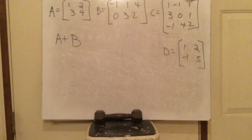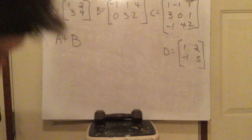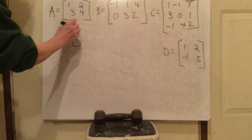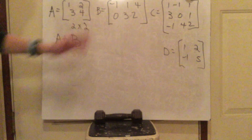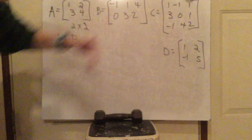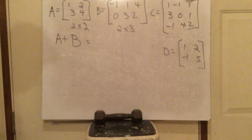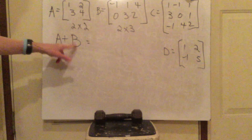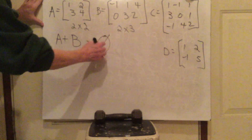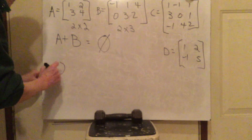The first problem is A plus B. Look carefully at the dimensions of matrix A — it's two by two, two rows and two columns. Matrix B has two rows and three columns. The rule for addition is that you can only add matrices if they have the same dimensions. These two do not have the same dimensions, so they cannot be added.